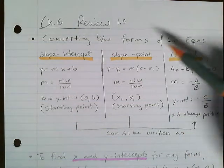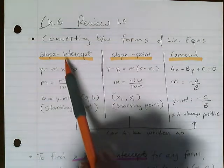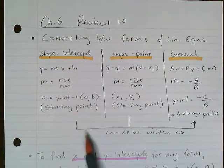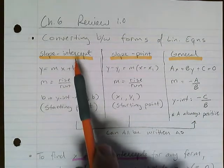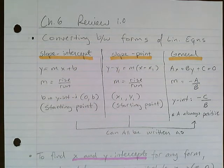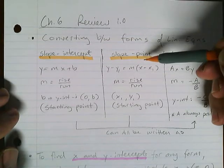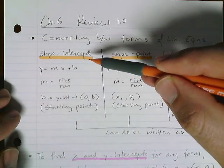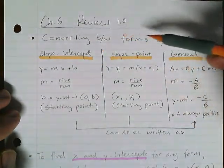Converting between forms of linear equations - you should be able to move from slope-intercept form, and you can always move to the general form. Whether you have slope-intercept or slope-point, they can always be written as the general form, and that has to be done algebraically. You have to show how to get there. You can also easily go from slope-point to slope-intercept.